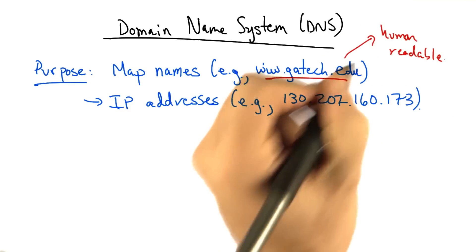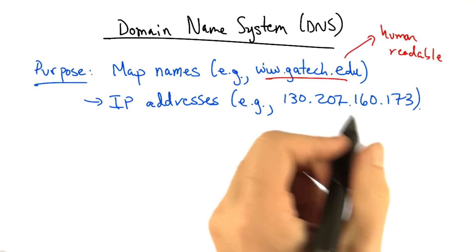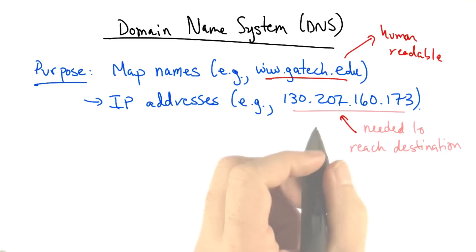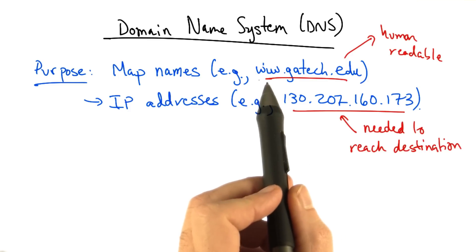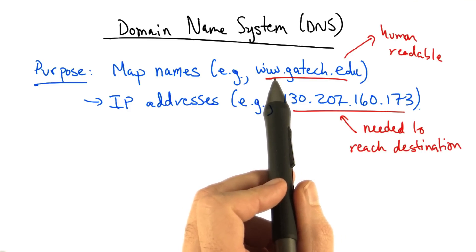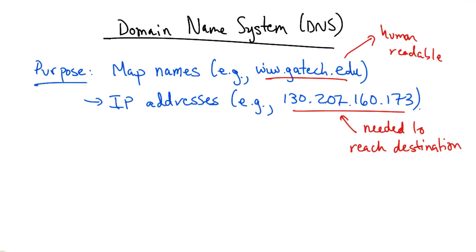A name such as this is human readable and much easier to remember and type than an IP address. But in fact, the IP address is what's needed to send traffic to the intended destination, so we need a lookup mechanism that takes a human readable name and maps it to an IP address. The system that does this is the domain name system, or DNS.